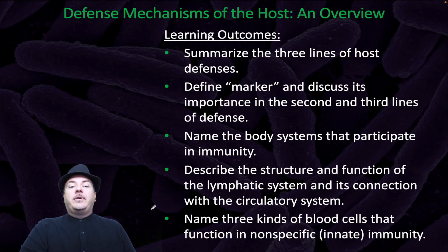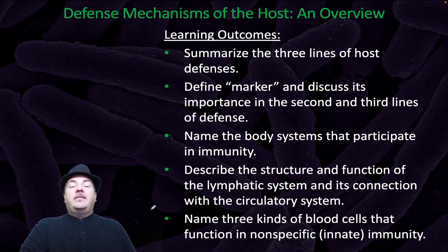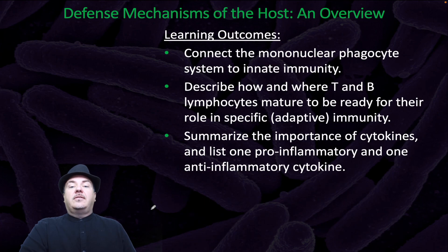By the end of this video, you should be able to summarize the three lines of host defense, define marker and discuss its importance in the second and third lines of defense, name the body systems that participate in immunity, describe the structure and function of the lymphatic system and its connection with the circulatory system, name three kinds of blood cells that function in non-specific or innate immunity, connect the mononuclear phagocyte system to innate immunity, describe how and where T and B lymphocytes mature to be ready for their role in specific or adaptive immunity, and summarize the importance of cytokines and list one pro-inflammatory and one anti-inflammatory cytokine.